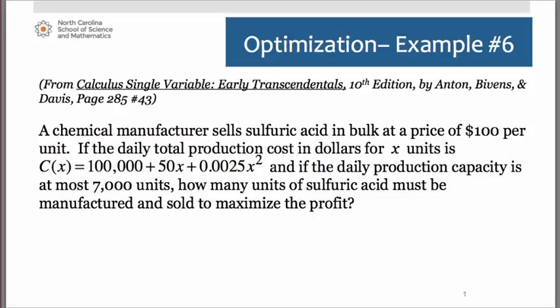Here we have a chemical manufacturer selling sulfuric acid in bulk at a price of $100 per unit. If the daily total production cost in dollars for x units is C(x) = 100,000 + 50x + 0.0025x², and if the daily production capacity is at most 7,000 units,